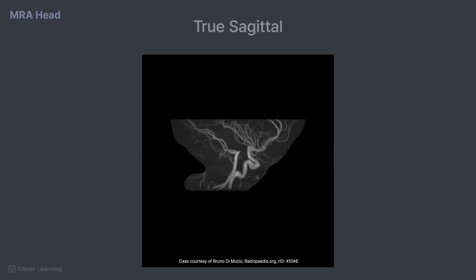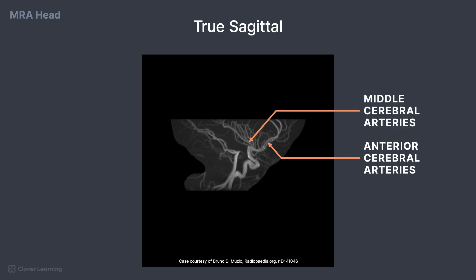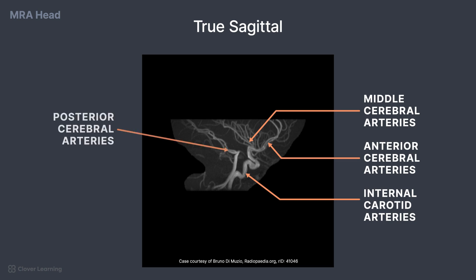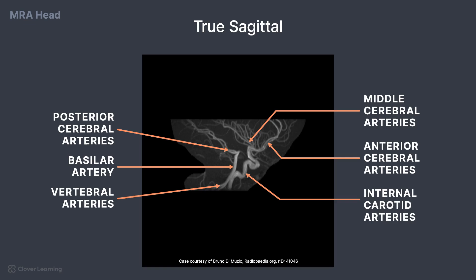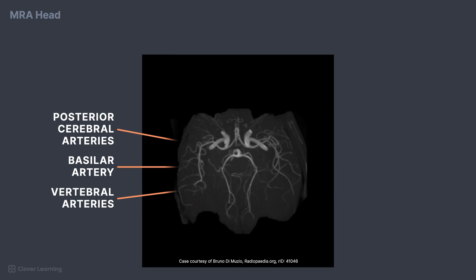On the true sagittal view, the anterior cerebral arteries, middle cerebral arteries, and internal carotid arteries are seen. For the posterior circulation, we can see the posterior cerebral arteries, basilar artery, and vertebral arteries.